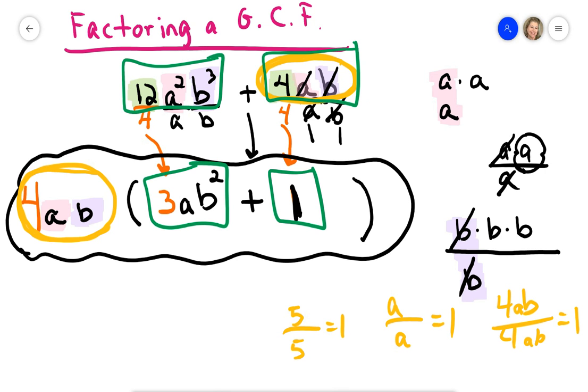And again, you can always distribute back to see if it made sense. But that's another example of greatest common factoring.